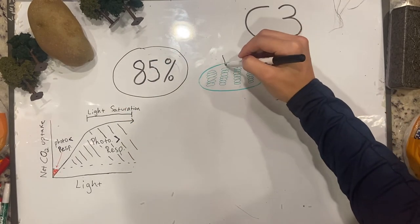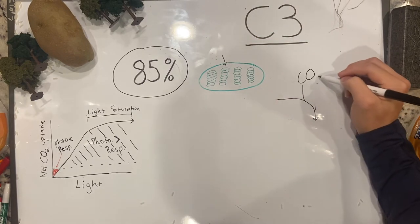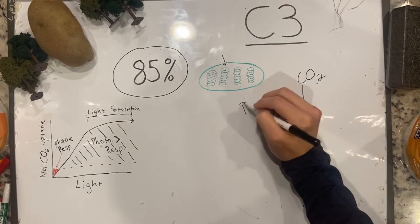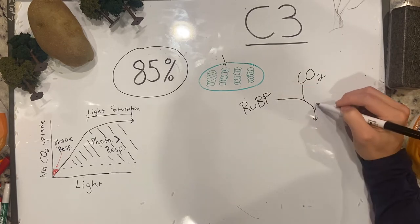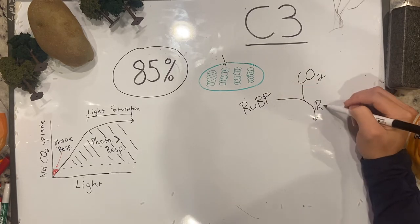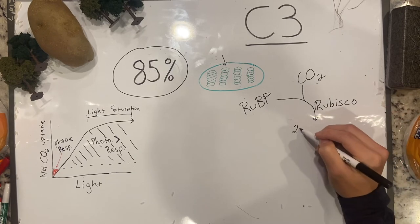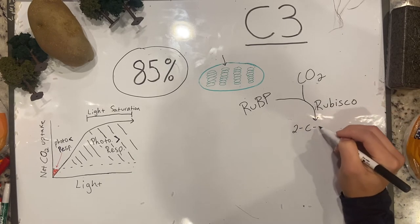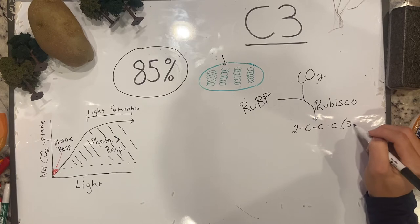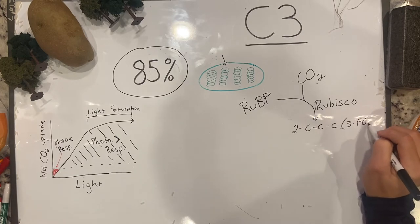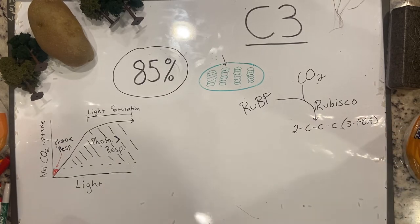Photosynthesis in C3 occurs in the chlorophyll. Carbon dioxide is taken from the air and is fixated by the enzyme rubisco with a 5-carbon molecule called RUBP, ribulose 1,5-bisphosphate, to form two 3-carbon molecules. These 3-carbon molecules — 3-phosphoglyceric acid — are produced after the carbon is fixed, and this is where C3 photosynthesis gets its name.